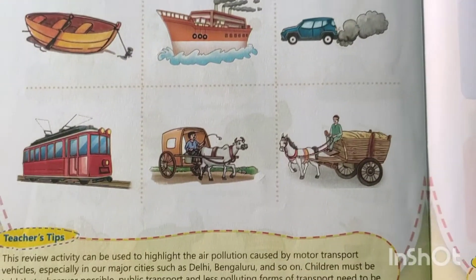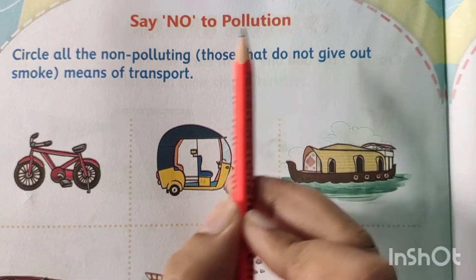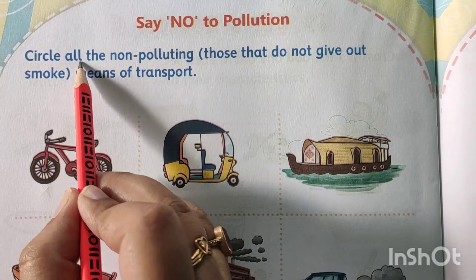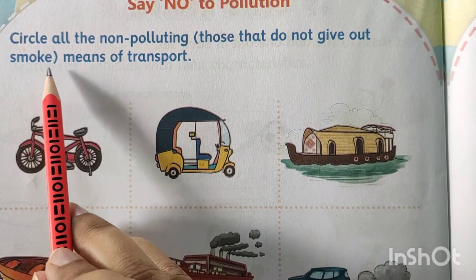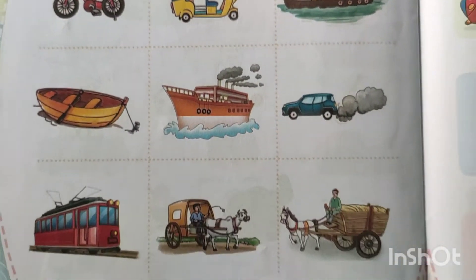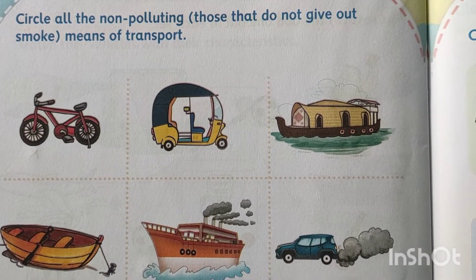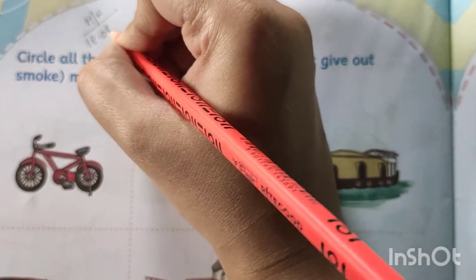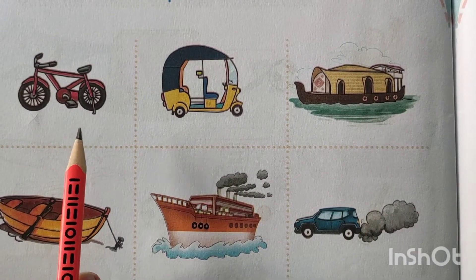Turn over to the next page — page number 26. That is 'Say No to Pollution.' You can see here some transportation. And what do you see? Circle all the non-polluting means — those that do not give out smoke. Smoke means pollution. Circle all the non-polluting means of transport. This is also your homework. Write HW and the same date. At first you see the pictures and write the transport name here.